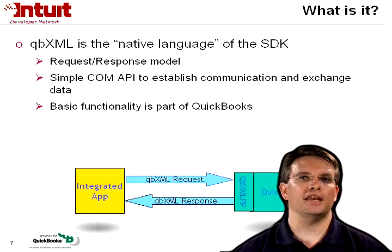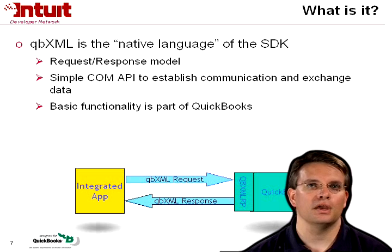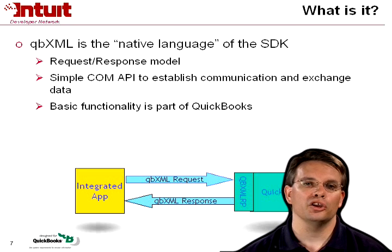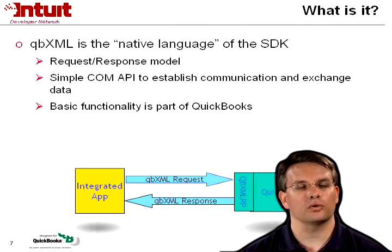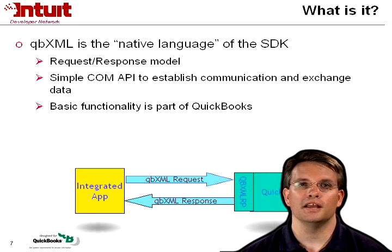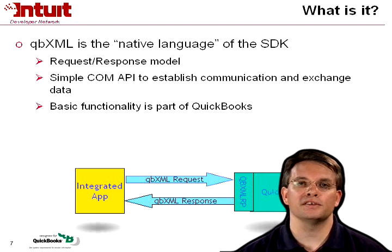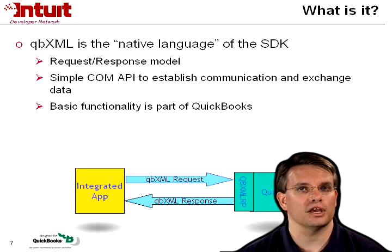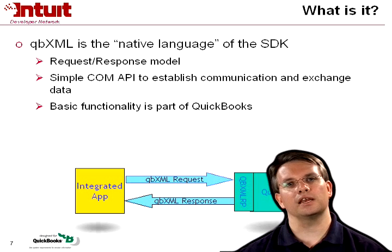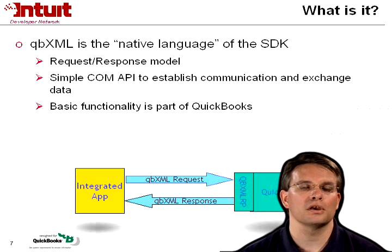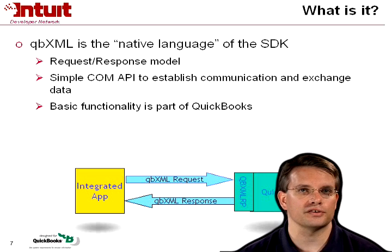QBXML is the native language of the SDK. It has a request-response model, so you send a request to QuickBooks and QuickBooks responds with the data that you asked for. It's a very simple COM API — basically five methods to establish the communication and exchange the data with QuickBooks. And that basic functionality is installed with QuickBooks 2002 through 2004.